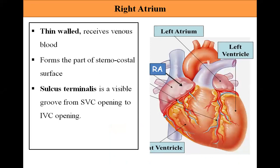First we will study the right atrium. It is a thin-walled structure and it receives the venous blood. It forms part of the sternocostal surface. The sulcus terminalis is visible from the opening of the superior vena cava to the opening of the inferior vena cava.